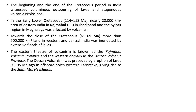The beginning and end of the Cretaceous period in India witnessed large amounts of lava flows and huge volcanic explosions. In the early Cretaceous, around 20,000 square kilometers of eastern India — the Rajmahal in Jharkhand and the Sylhet in Meghalaya — were covered. The Sylhet traps and the Rajmahal traps were formed in the early Cretaceous.